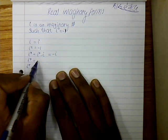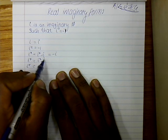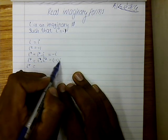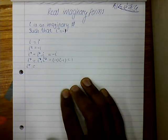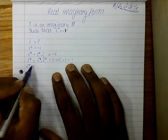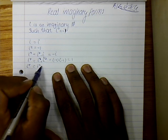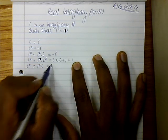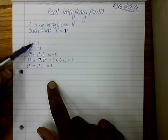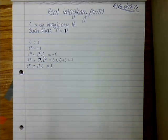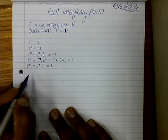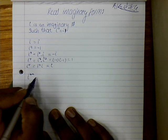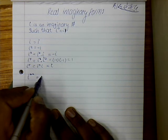i to the power of 4 is made up of i squared multiplied by i squared, which is minus 1 times minus 1, equal to 1. i to the power of 5 is made up of i to the power of 4 times i, and since i to the power of 4 equals 1, this gives i. If you continue, you'll realize it is repeating — when i is raised to any multiple of 4, we get positive 1.